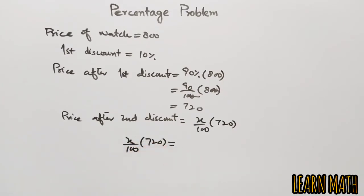So now we will find x. x will be equal to 612 multiplied by 100 divided by 720. We will simplify this and we will get x equals 85. It means 85% of 720 equals 612, so the second discount is 15%.